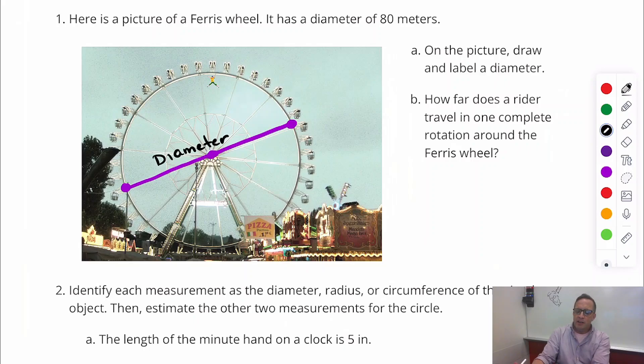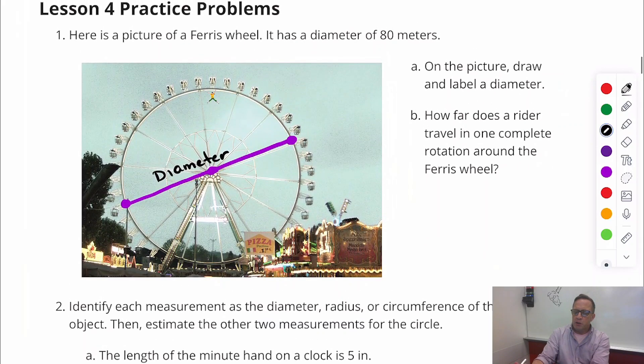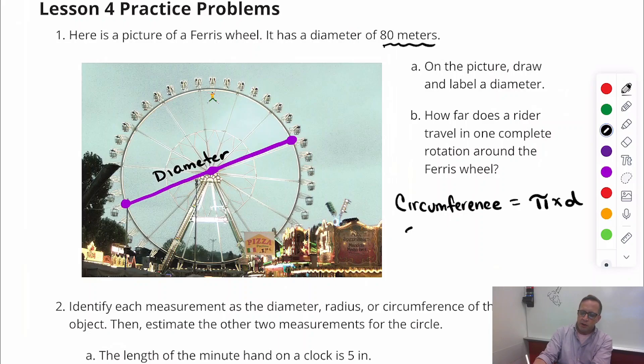All right, so that is that. How far does a rider travel in one complete rotation around this Ferris wheel? Well, it says up here that the diameter is about 80 meters. So we're going to apply circumference. Circumference equals pi times diameter. So I'm just going to do 3.14 times 80, and I've got 251.2, and that's going to be meters.